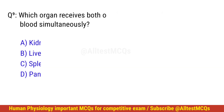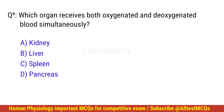Question number 9. Which organ receives both oxygenated and deoxygenated blood simultaneously? The right option is B: Liver.